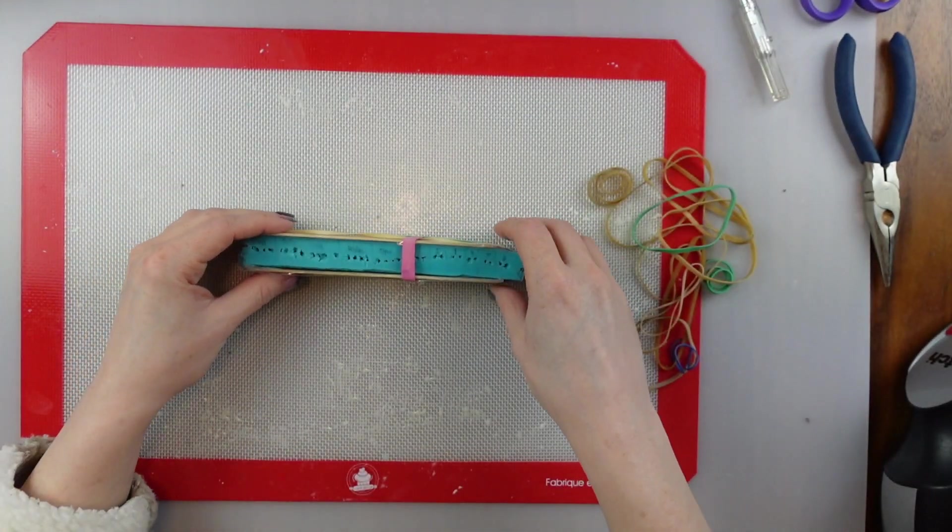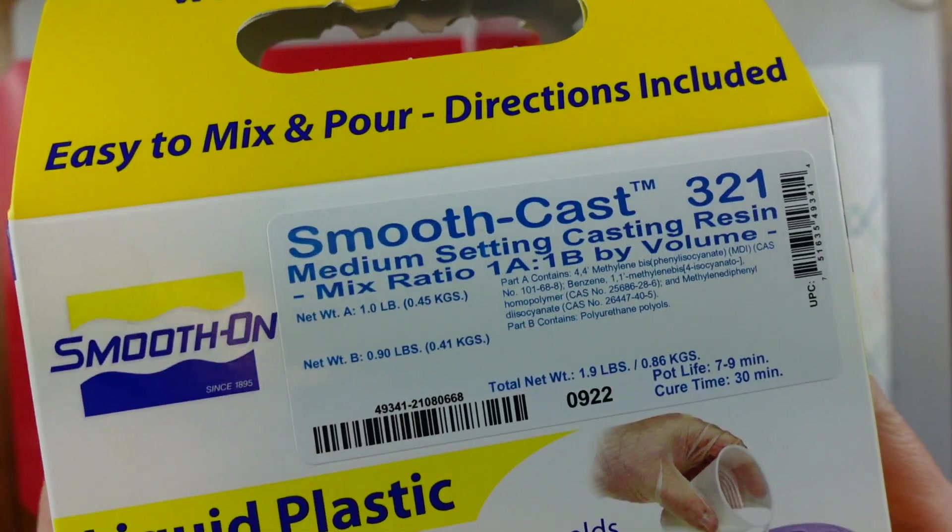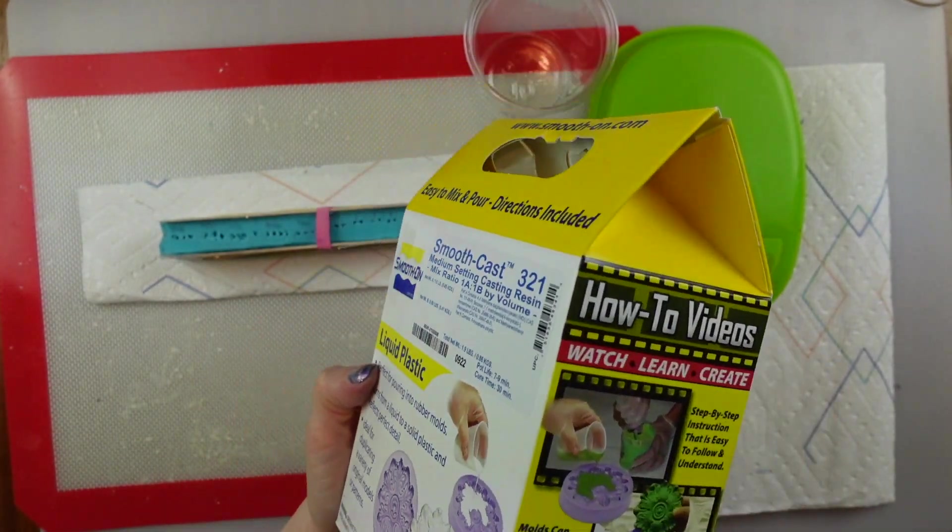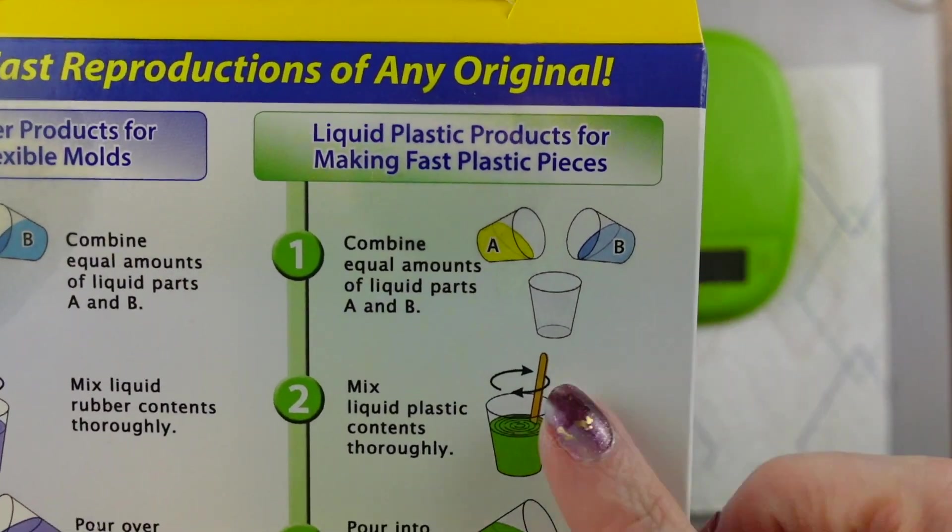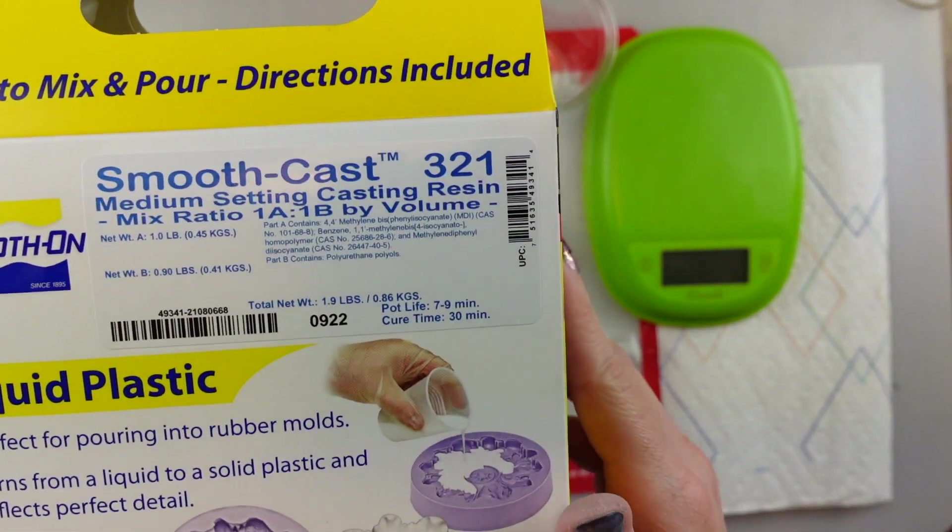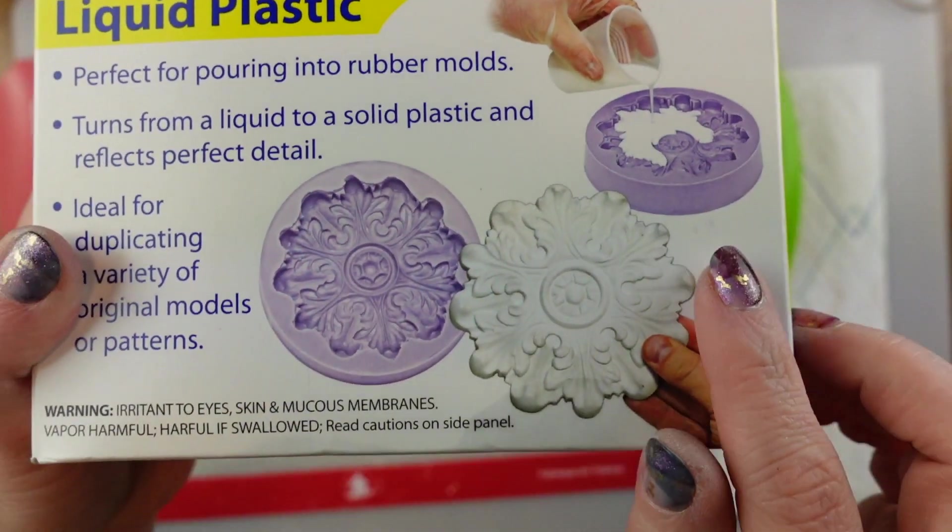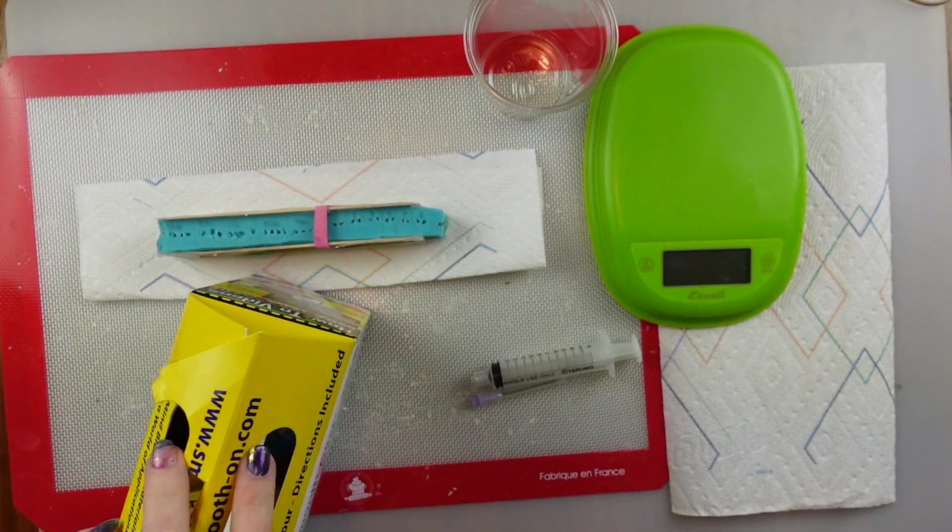So we are ready to start the resin. So I am using, once again, Smooth On brand. This is called Smooth Cast 321. They make a bunch of different resins, but this is the one I'm using. It just uses, much like the silicone, equal parts of A and B. So you mix the two parts together. It starts a chemical reaction. As you saw there, 7 to 9 minutes pot life, 30 minutes cure time.